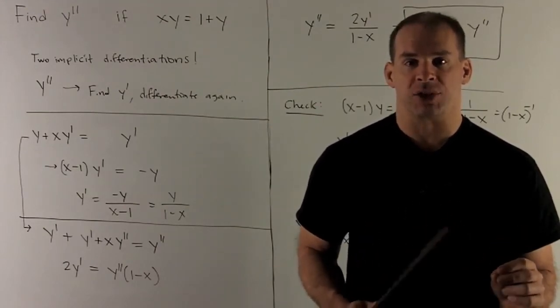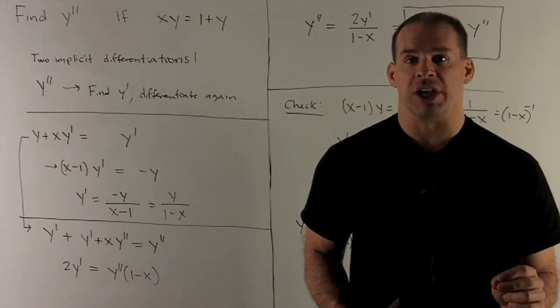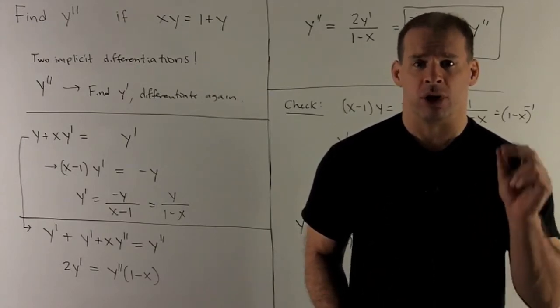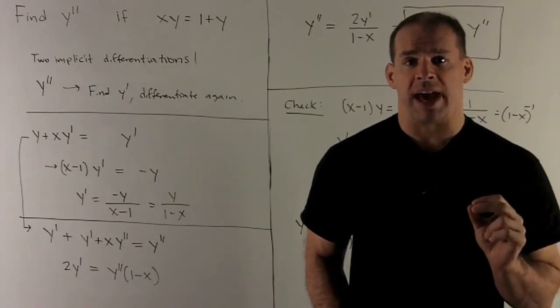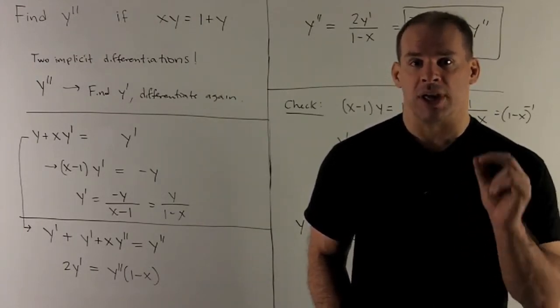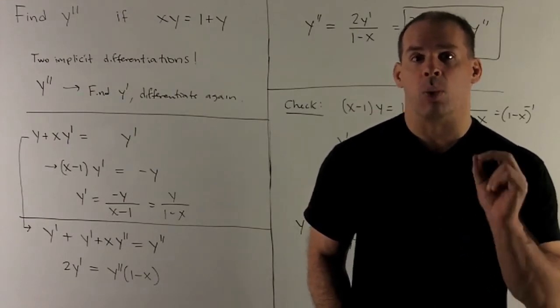Since everything's in terms of x and y, for implicit differentiation, we treat y as a function of x. That means whenever a derivative with respect to x hits y, I have to use the chain rule. So that just means tacking on a y prime.